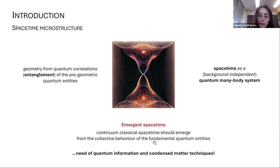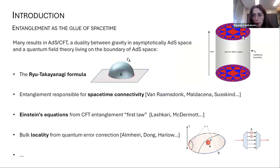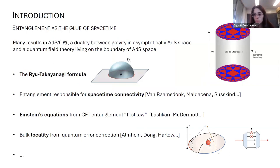If spacetime has to emerge from the collective behavior of these quantum entities, then we expect quantum correlations and in particular entanglement to play a role in this emergence of geometry. We have this picture of spacetime emerging from the collective behavior of fundamental quantum entities. You can already see why quantum information and condensed matter techniques are crucial to reconstruct geometry in this scenario.